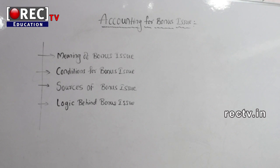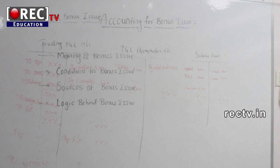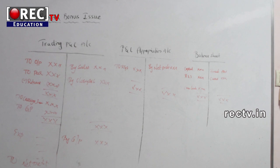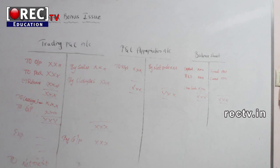Now let's see the logic behind the bonus issue — why the company can't give dividend directly to the existing shareholders and why they issue bonus instead. If they give 100% profits in the form of dividends to existing shareholders, there will be double taxation. You may wonder where the double taxation occurs: previously, when the company earns operating profit, they pay income tax on that profit.